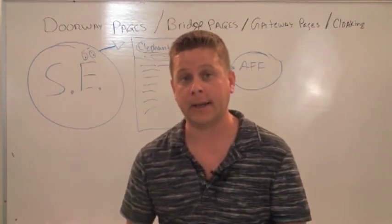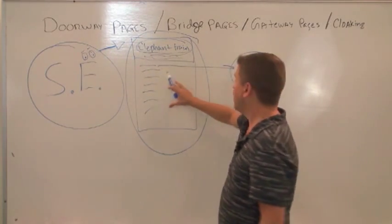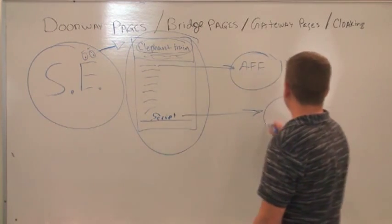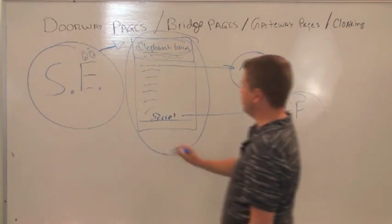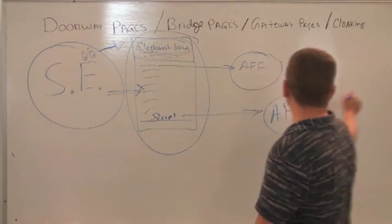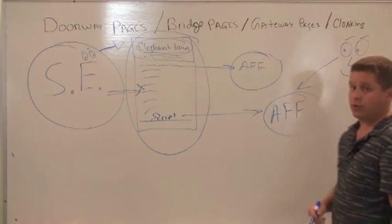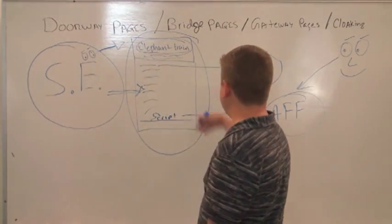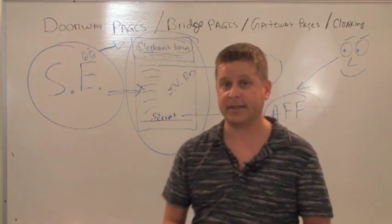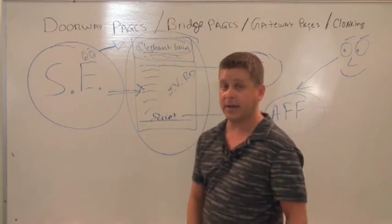Another way was called cloaking. Cloaking would use a page pretty much identical to the gateway page example, but there would be a little script that would redirect the visitor to the affiliate page. So Google would look at this content and say, 'Wow, this page is great — it's all about elephant training,' but your visitor would be redirected to the affiliate page or whatever you wanted them to see. You're basically tricking Google — cloaking your site. This was done with a JavaScript redirect, which worked like a refresh: the content would be there, but visitors wouldn't even see it because it would redirect to the affiliate page so fast.